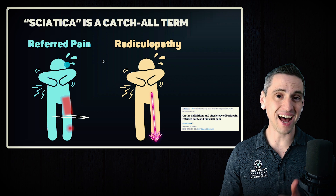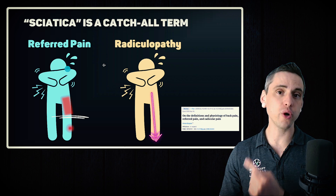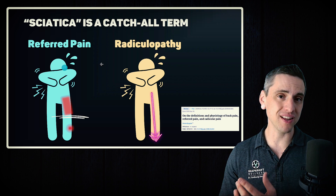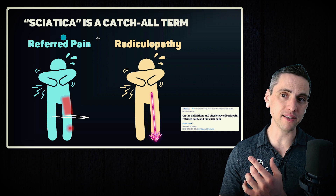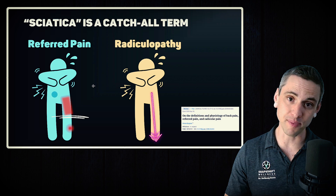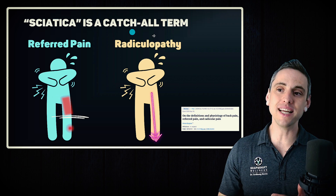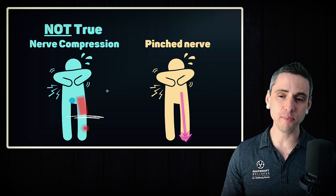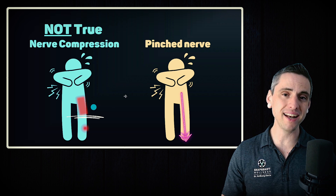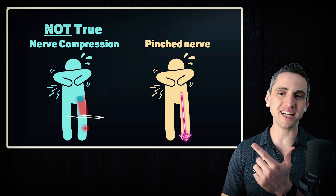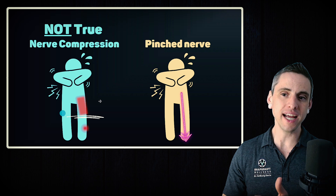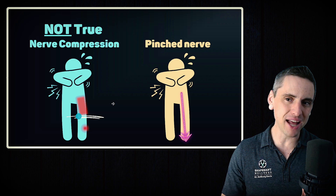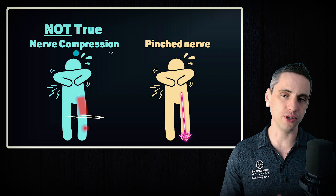Referred pain is either nociceptive or nociplastic. More likely, if it's gone on for more than three months, it's most likely nociplastic — which is why I've painted this in blue, the color I've been using for nociplastic. A radiculopathy has telltale symptoms, but the important thing here is that somatic referred pain is blotchy, patchy, wide and diffuse. It usually doesn't go past the knee, and if it does, it's inconsistent and patchy. This is not true nerve compression.